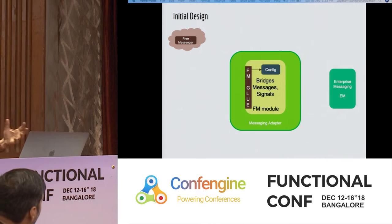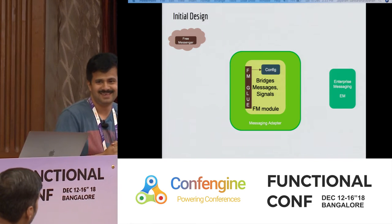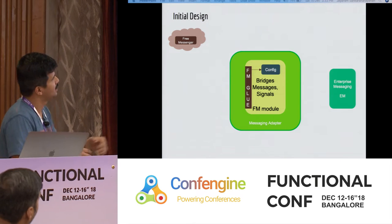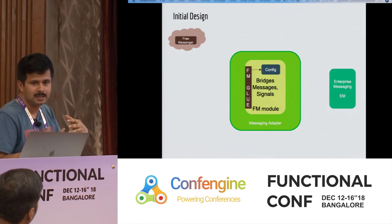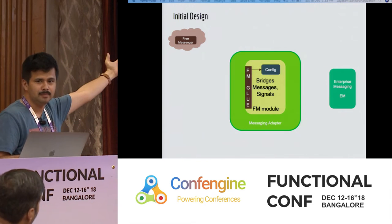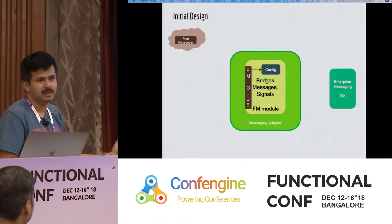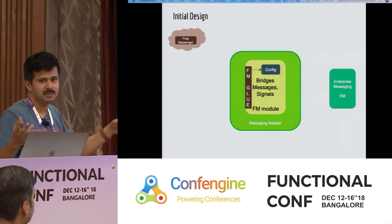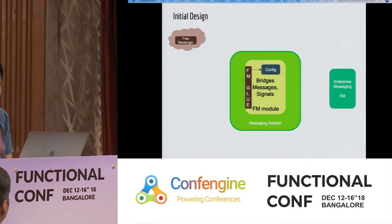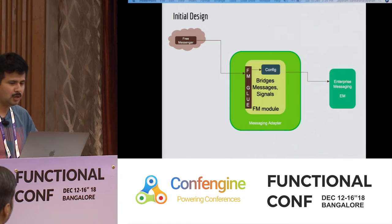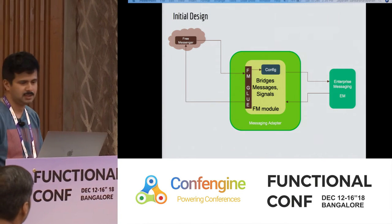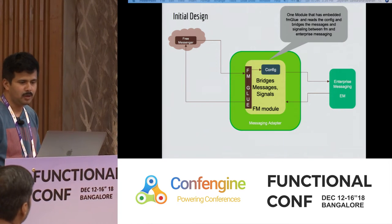This is what it looked like when we said we were done with the initial increments and it came for review. It was a single Node module — a glue — that connected to the FM (free messenger) cloud service and did everything: read its config, used it, bridged messages, bridged signaling, talked to the enterprise. It got messages from FM and sent them to the enterprise and vice versa. One single module that did everything.